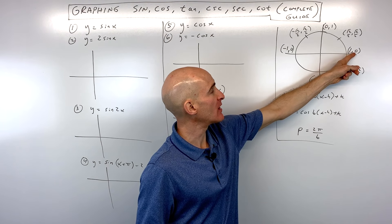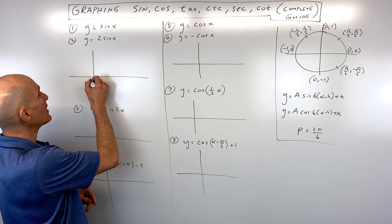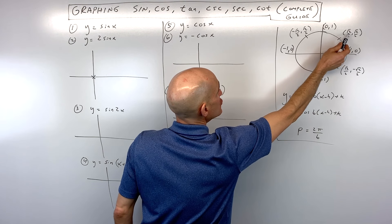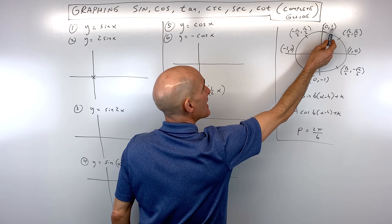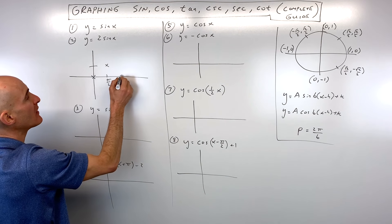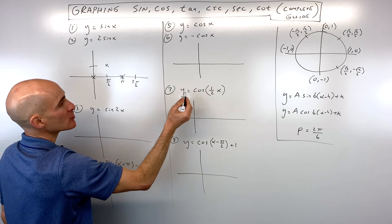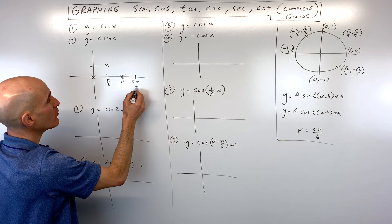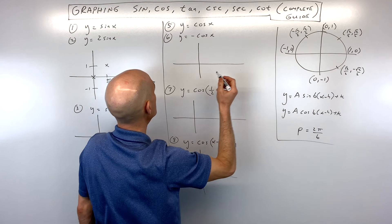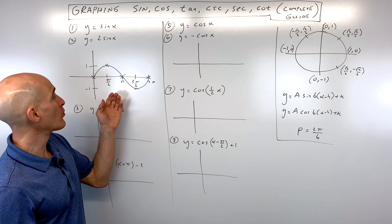The sine of zero radians is zero, so I'm going to put a point right here at zero. At 90 degrees the sine value is going to be one, so at pi over two the y value is one. At 180 degrees or pi the y value is zero. At three pi over two or 270 degrees the y value is negative one. And then at two pi we're back where we started, which is zero. So this is your basic sine graph and you want to memorize this basic shape.